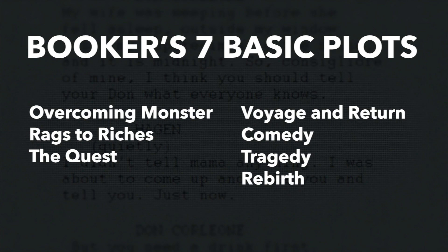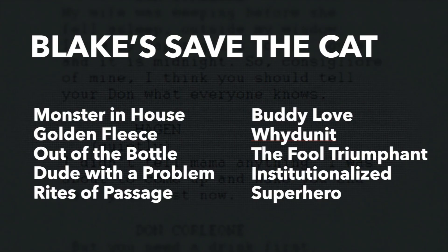His seven basic plots are: overcoming the monster, rags to riches, the quest, voyage and return, comedy, tragedy, and rebirth. Blake Snyder, in his book Save the Cat, identified 10 basic plots for film: Monster in the House, Golden Fleece, Out of the Bottle, Dude with a Problem, Rites of Passage, Buddy Love, Whodunit, The Fool Triumphant, Institutionalized, and Superhero. A cowboy movie is in a genre that includes many forms of story — Unforgiven is a voyage and return story, or you could say a buddy love story. The Searchers is a quest, or a golden fleece. Sci-fi is a genre that also includes a wide range of stories. Alien is an overcoming-the-monster or monster-in-the-house. It's not important that you use either of these schemes — just have a good sense of what other stories the story you want to understand is like.